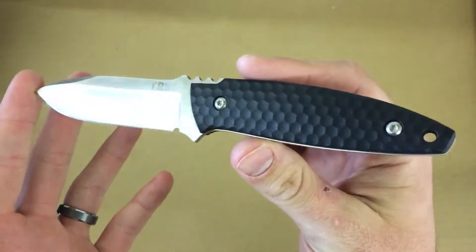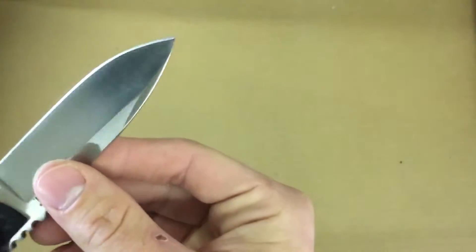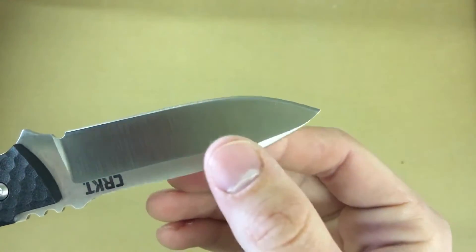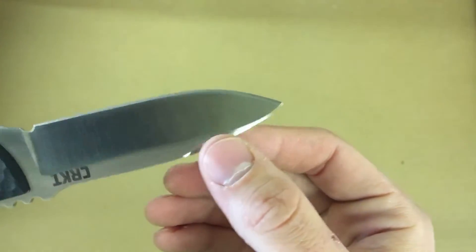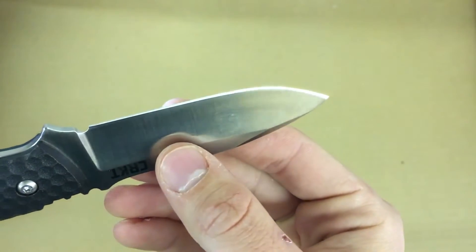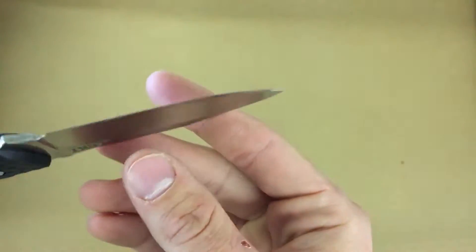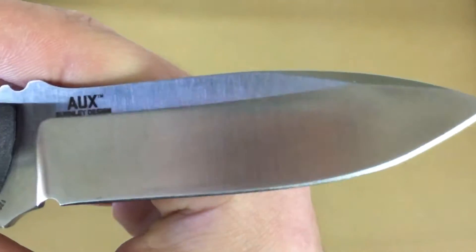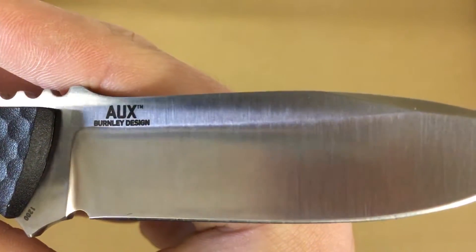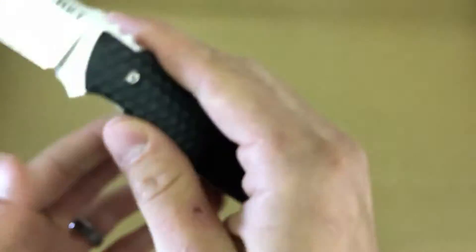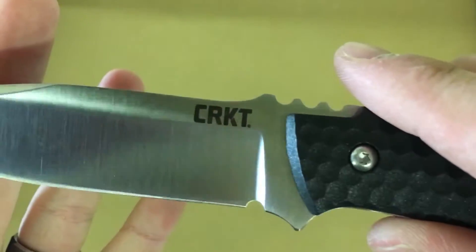Nice satin finish on this blade, you can see that reflecting some light. A pretty high hollow grind and this thing is extremely thin behind the edge. I did some cutting with it just to test initial sharpness and it came wicked sharp. Good job CRKT. It says Aux and Burnley design on this flat and just CRKT on this flat.